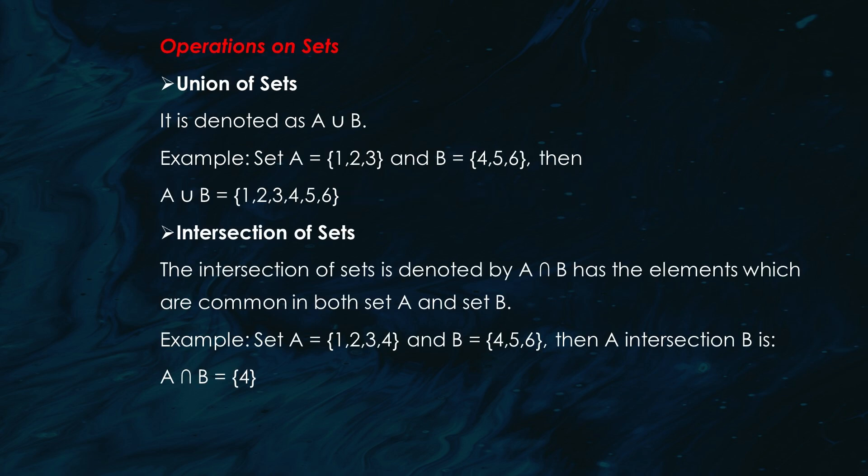Now let's get into some fun stuff — operations on sets. (1) Union: A ∪ B. This combines all elements from both sets. If set A = {1, 2, 3} and set B = {4, 5, 6}, then the union of A and B = {1, 2, 3, 4, 5, 6}.